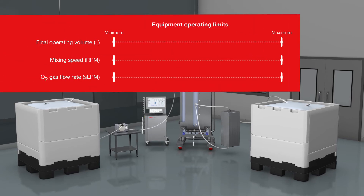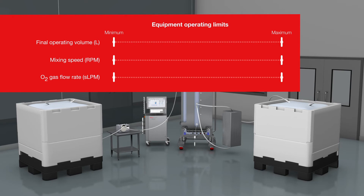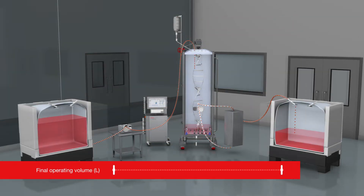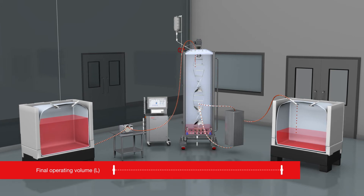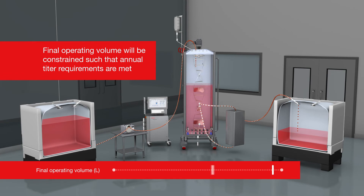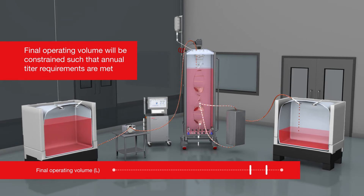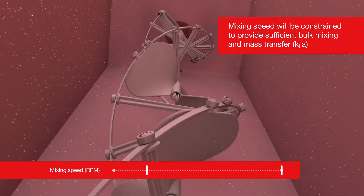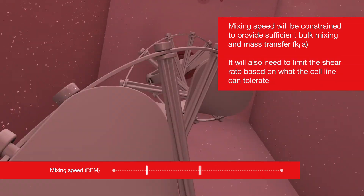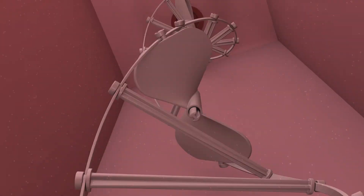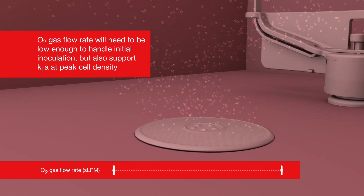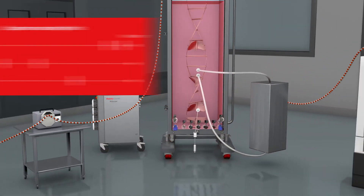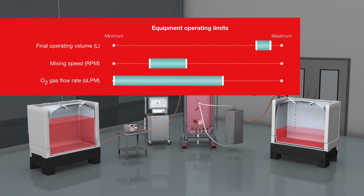The equipment operating limits for the process can now be used to outline the design space. This is frequently determined by the capabilities of the production reactor and paired controller, as they are often the most limiting factors. The practical operating range must now be defined: final operating volume will be constrained such that annual titer requirements are met; mixing speed will be constrained to provide sufficient bulk mixing and mass transfer, or KLA, while also limiting shear rate based on what the cell line can tolerate; and oxygen gas flow rate will need to be low enough to handle initial inoculation but also support KLA at peak cell density.